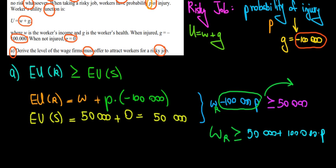Now let's just quickly interpret what this means because it makes sense. The wage must be at least 50,000. It must be at least the same as the safe job plus something. What is this plus something? This is the risk premium, because the job is risky. So we obviously require more money for doing it. That is the intuition. Hope this makes sense.